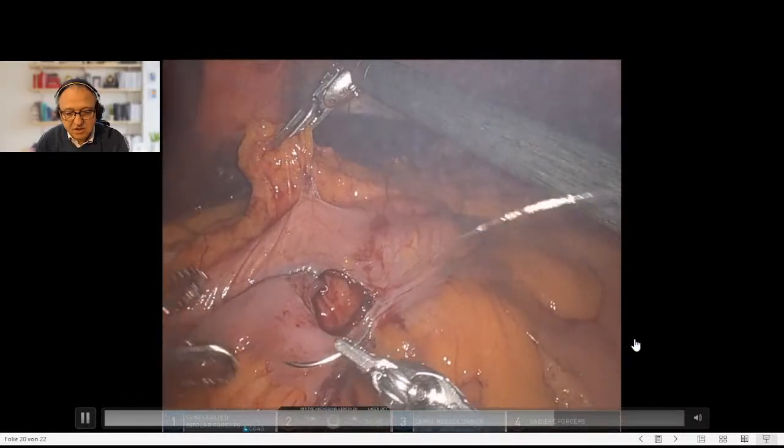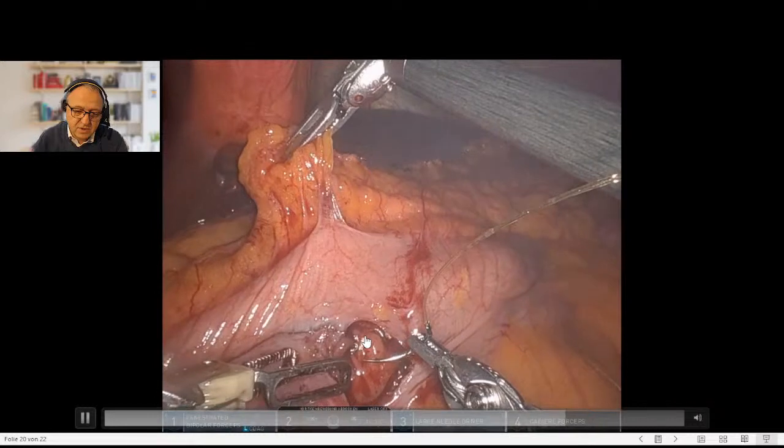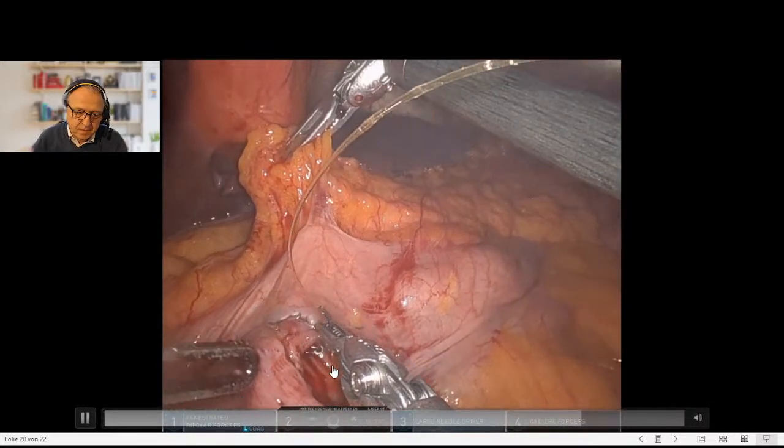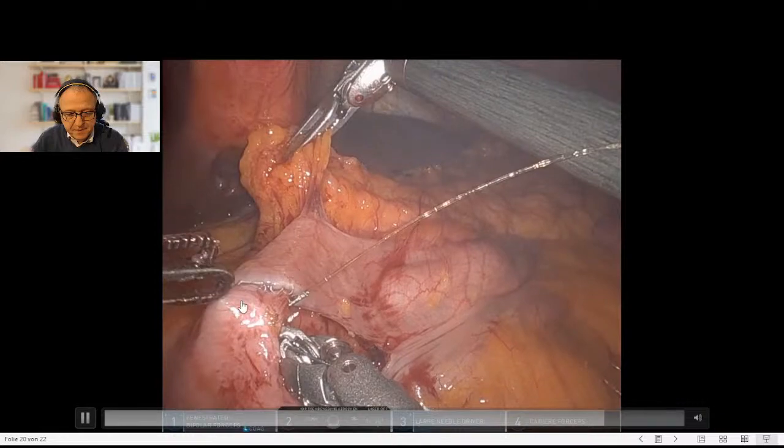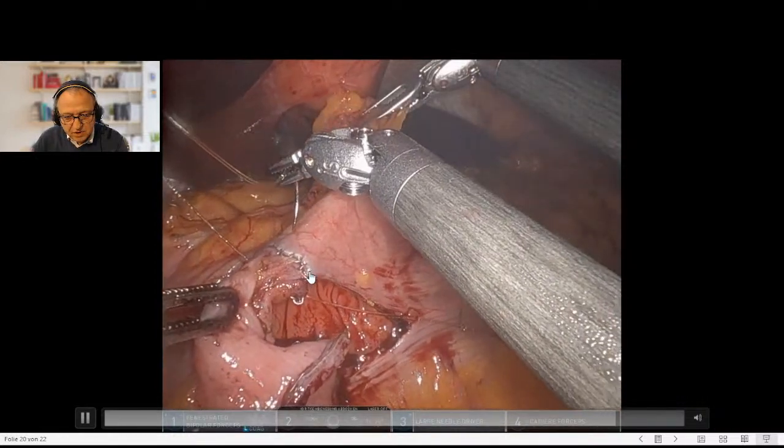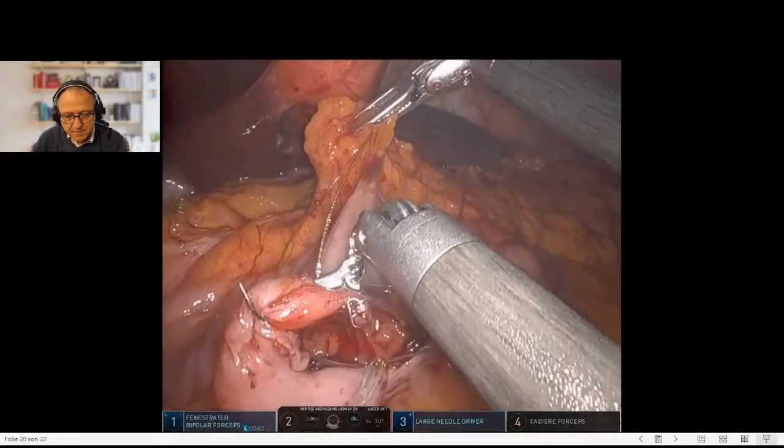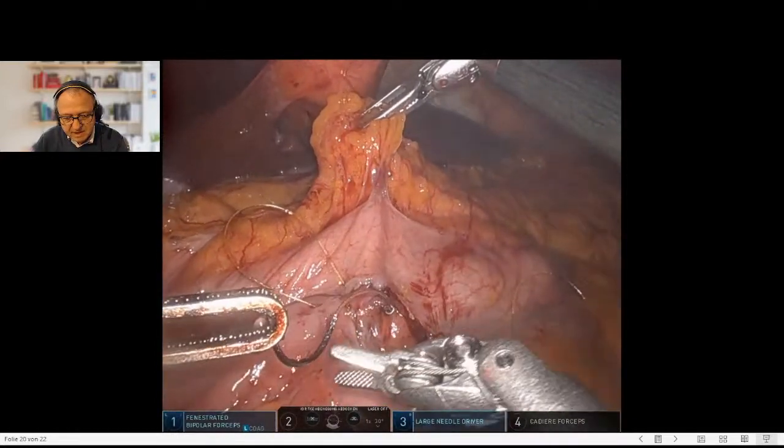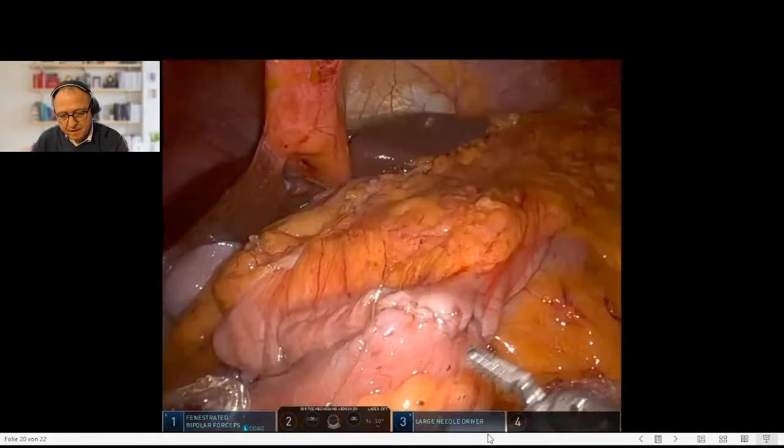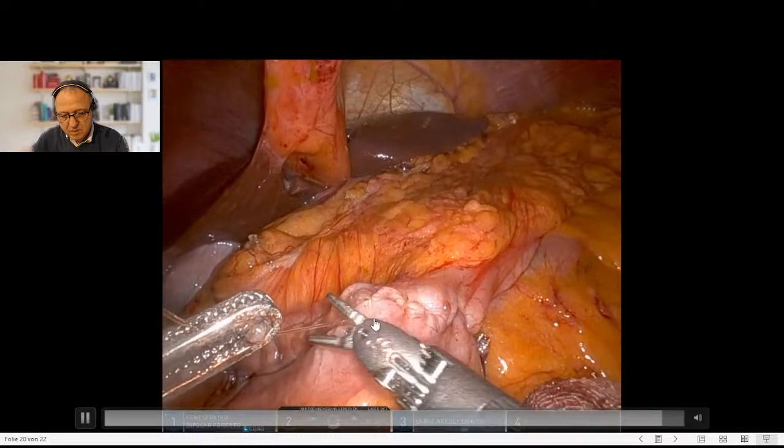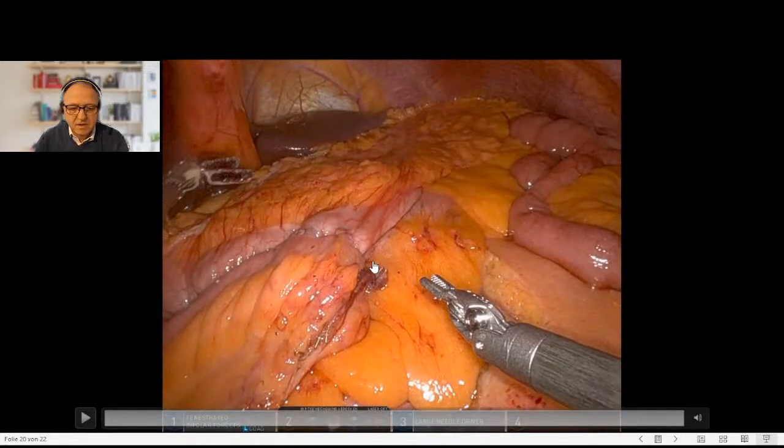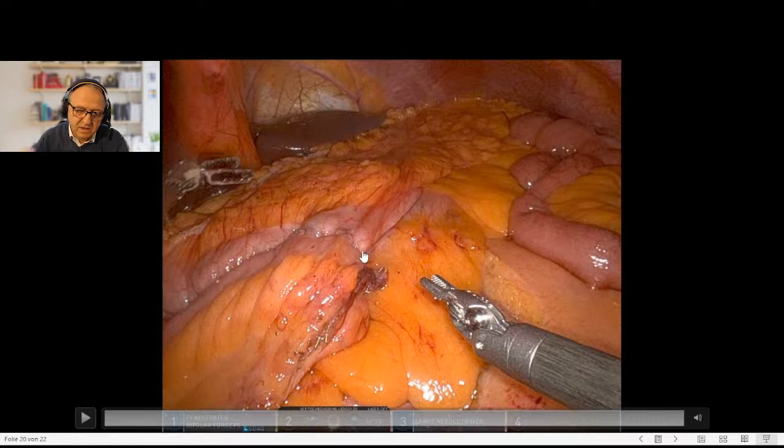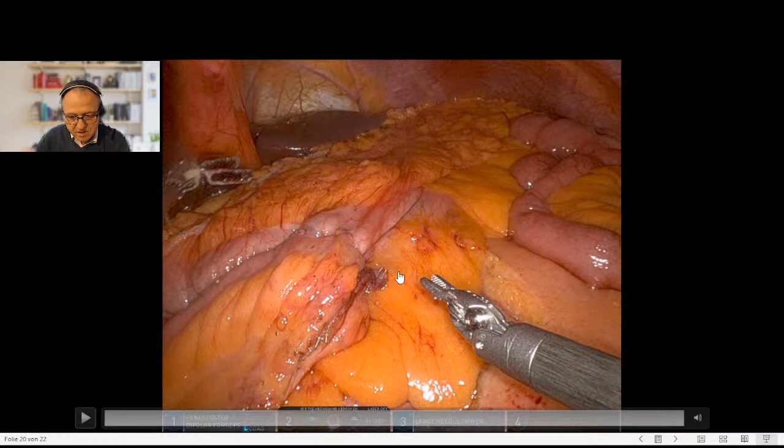That's the intracorporeal anastomosis. We start from each corner. I put the first stitch from inside, then use this suture for retraction. The second suture is placed at the other corner. Then we suture in both directions. The sutures cross in the middle and so a double layer suture of the anastomosis results.